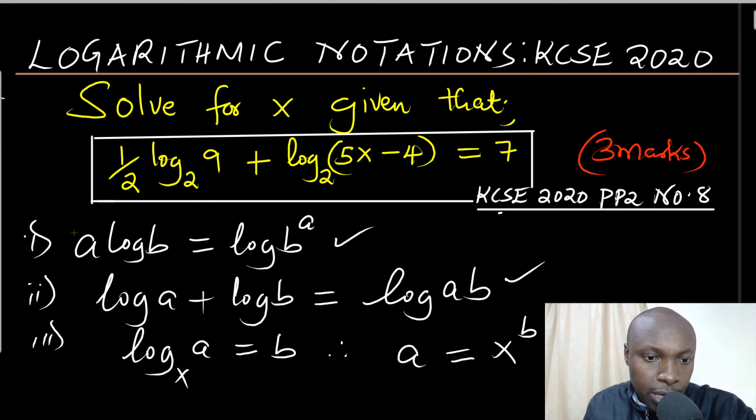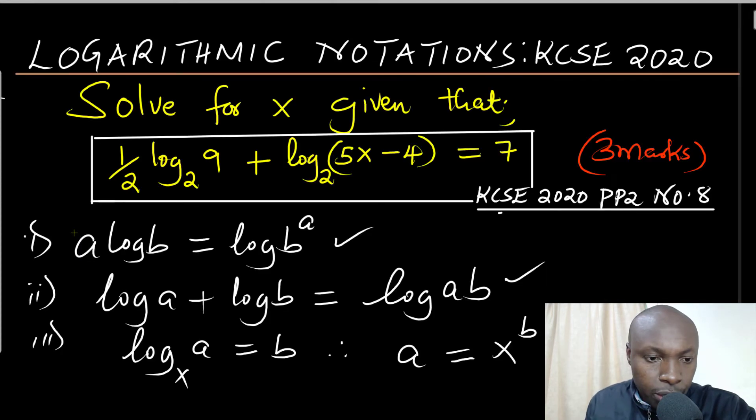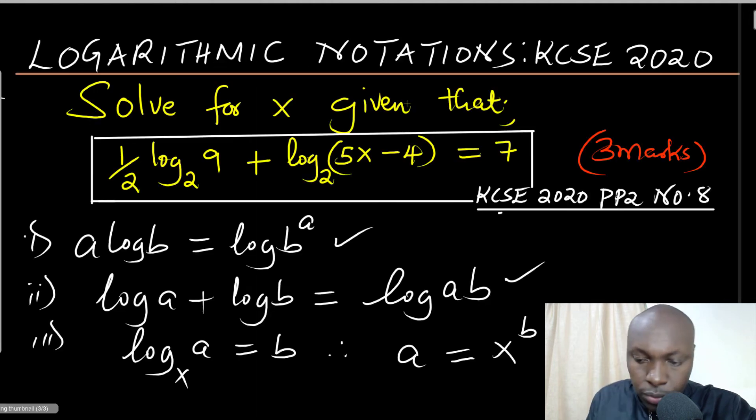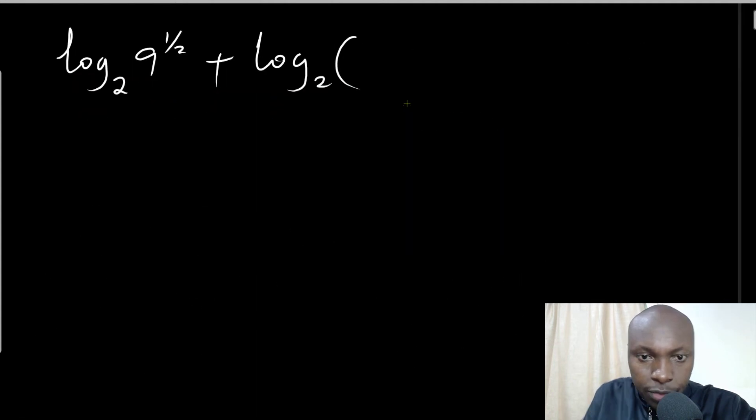I have log₂9, so using that law, this translates to log₂(9^(1/2)). Then plus the second term remains the same: log₂(5x-4).